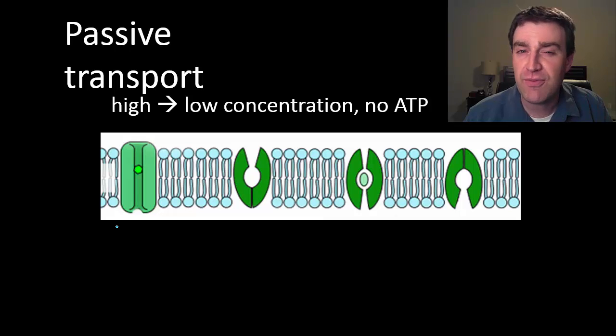There are three types of passive transport that we'll talk about, and really all that is different about them is in some cases they might be different particles that we're considering and in some cases they might be moving through different parts of the membrane.